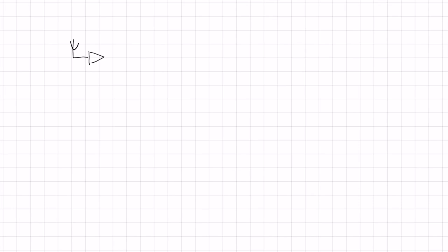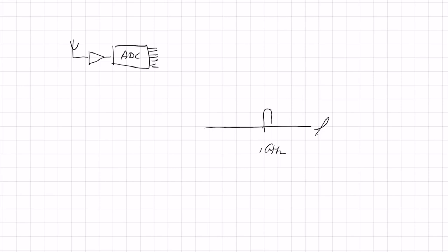Now let's take the example of a wireless receiver. We take our antenna, amplify the signal a bit, go to our analog-to-digital converter, and process it in the digital domain. Looking at the frequency spectrum of such an antenna — at maybe one gigahertz — there is a small channel a few megahertz wide. That's the signal we're interested in. We put it into the ADC with n bits, giving 2 to the power of n levels. Since the input signal is one gigahertz, the sample frequency must be bigger than two gigahertz, to satisfy the Nyquist criterion.